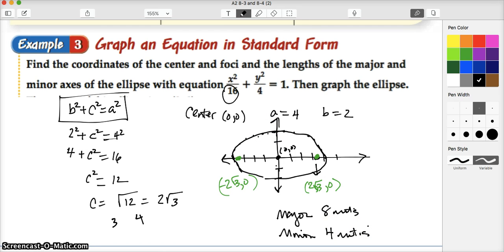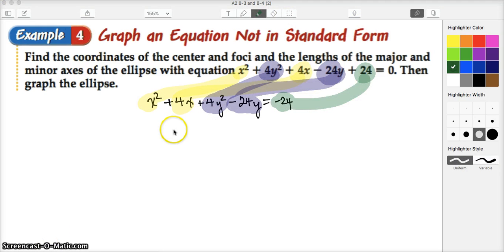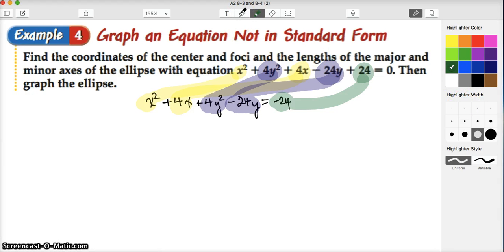Okay. So we have all the information we were asked for. Example 4: graph an equation, not in standard form. So find the equation, the coordinates of the center and the foci and the lengths of the major axis and the minor axis of the ellipse with this following equation. Then we're going to graph the ellipse. Let's go ahead and see what we can do. So like last time, we're going to take this equation, but we're going to organize it so that we're moving all the X terms together. And then we're going to move all the Y terms together.